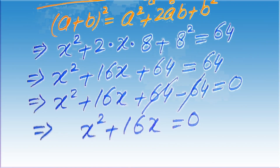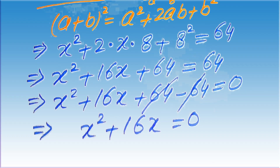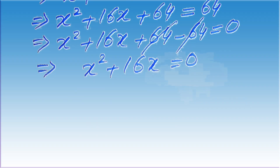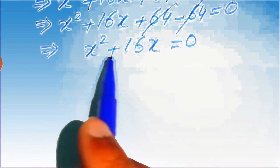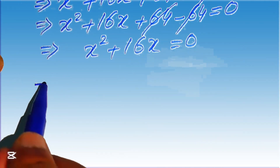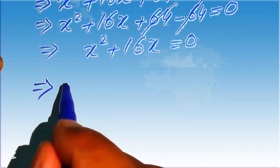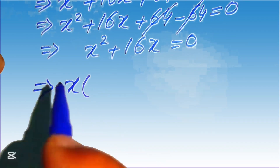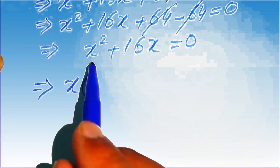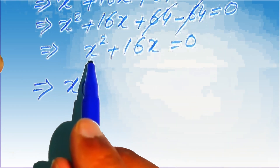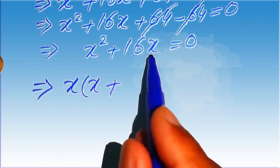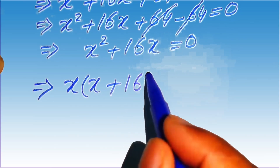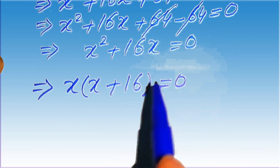This equation is quadratic in x. We factor it by taking x as the common term: x times x plus 16 equals 0.